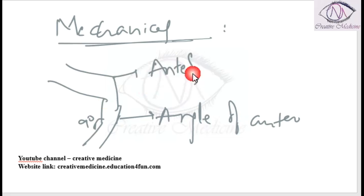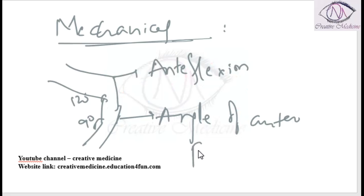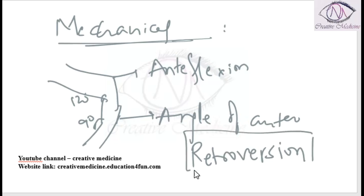The first step in prolapse is retroversion of the uterus. Whenever there is retroversion of the uterus, these angles will change, and thus there will be prolapse of the uterus.